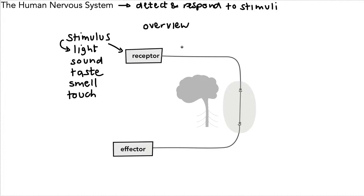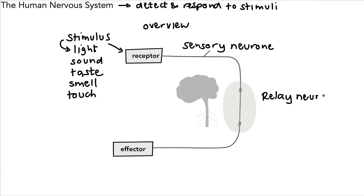A stimulus will be detected by a receptor, and that receptor will send an electrical impulse down a sensory neuron. There's our sensory neuron. That sensory neuron will carry the impulse to a relay neuron, which is found in the central nervous system.